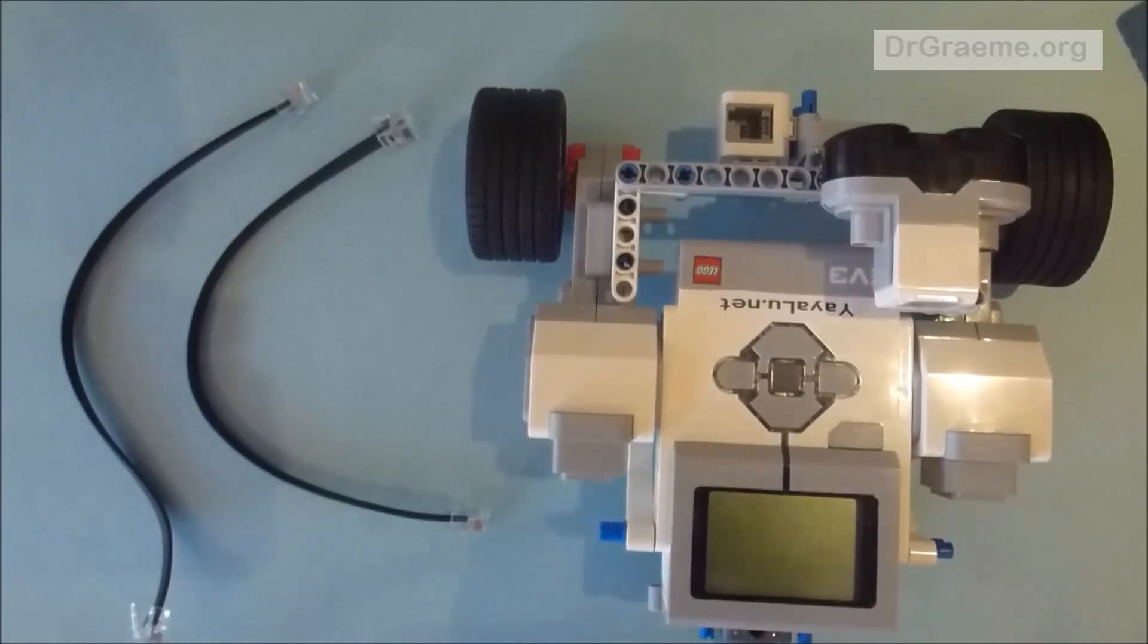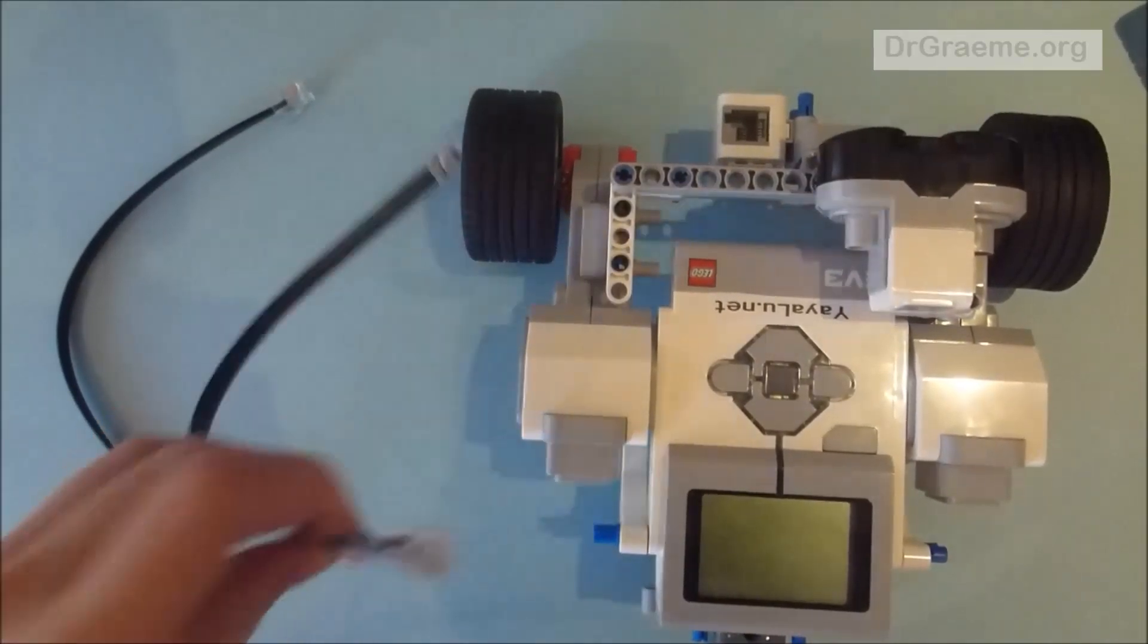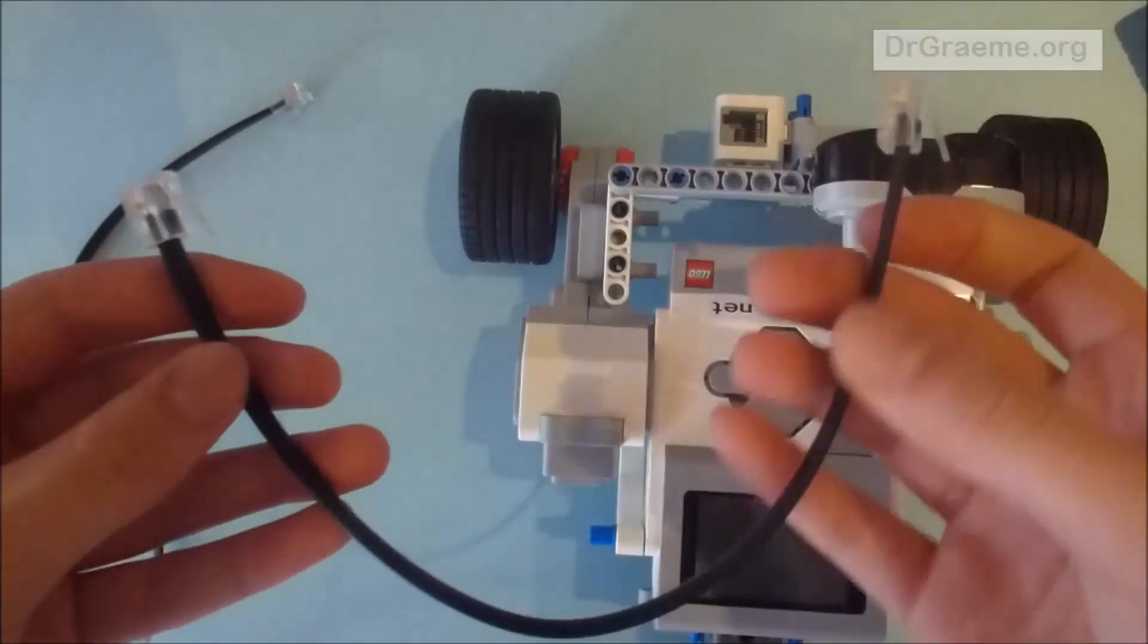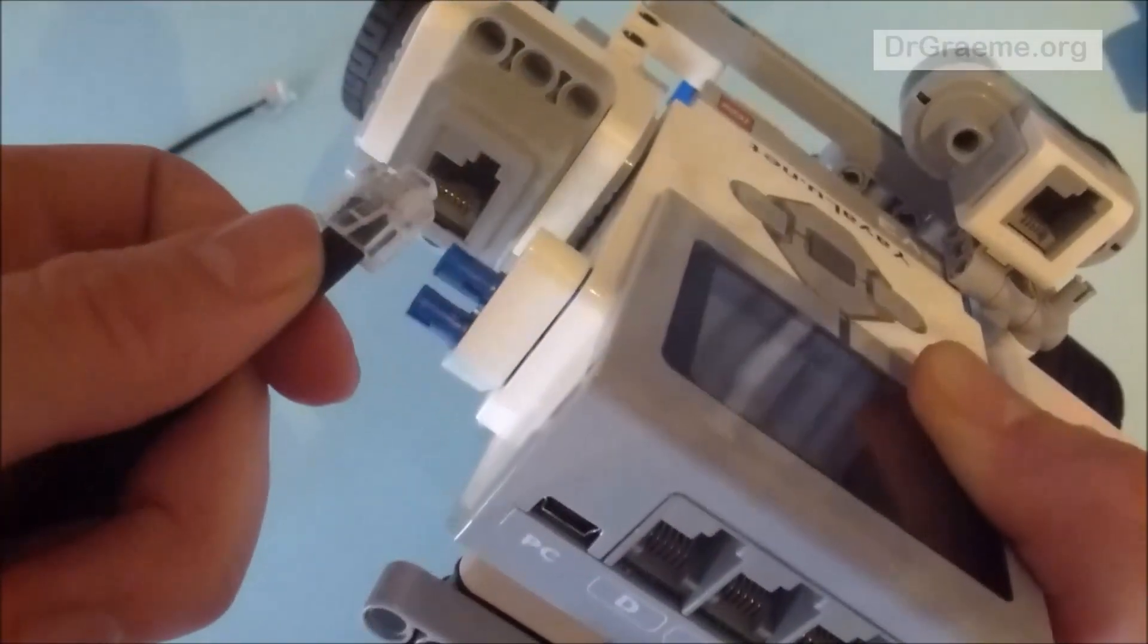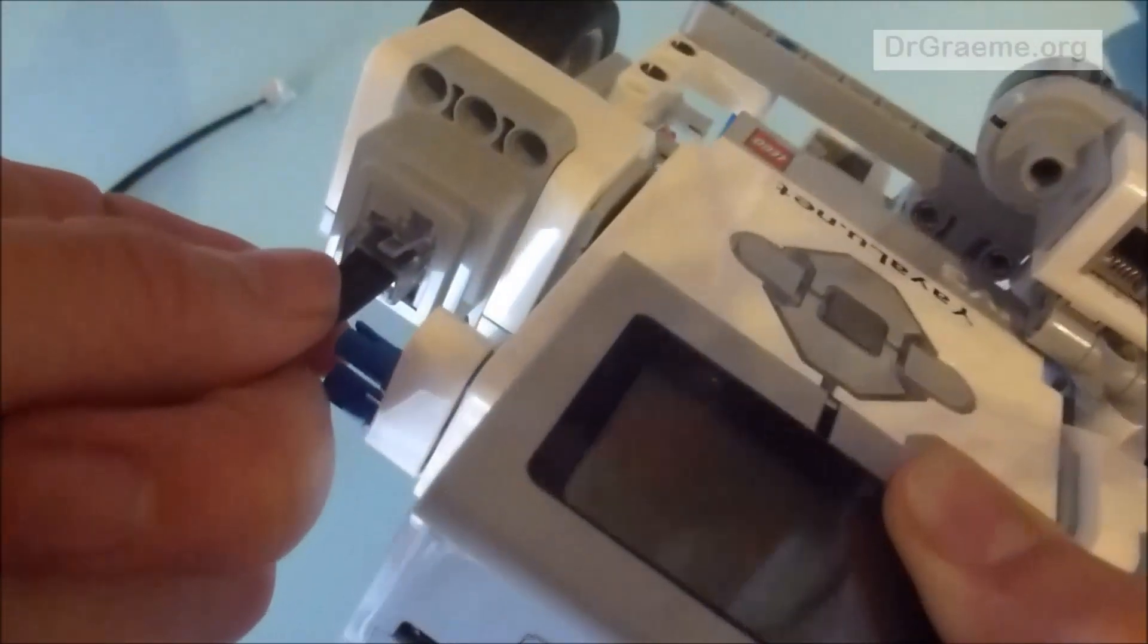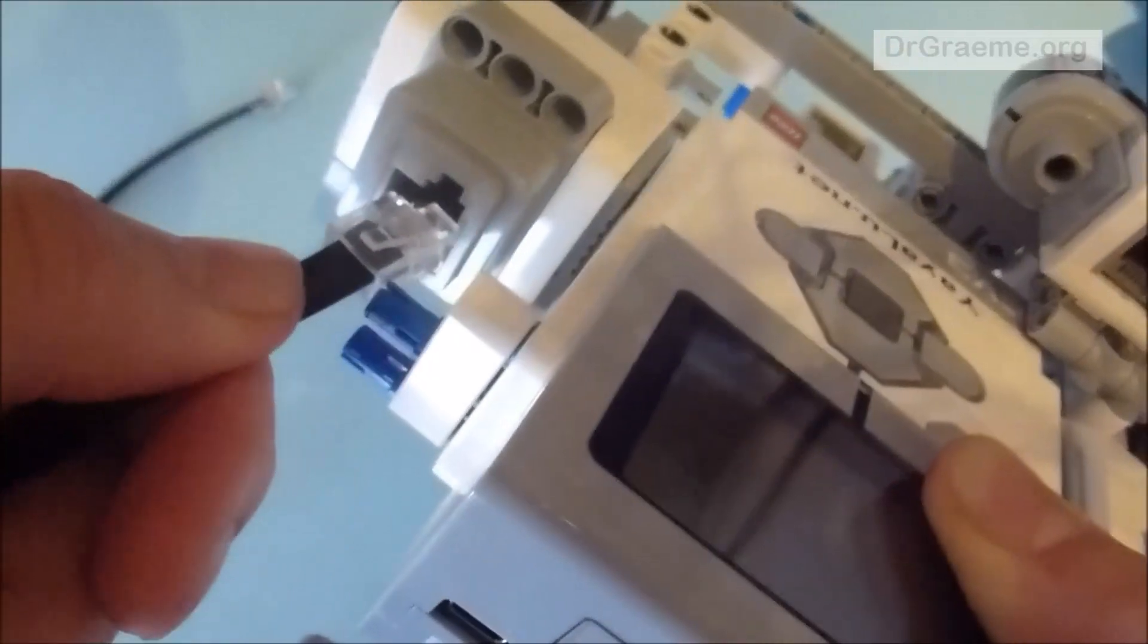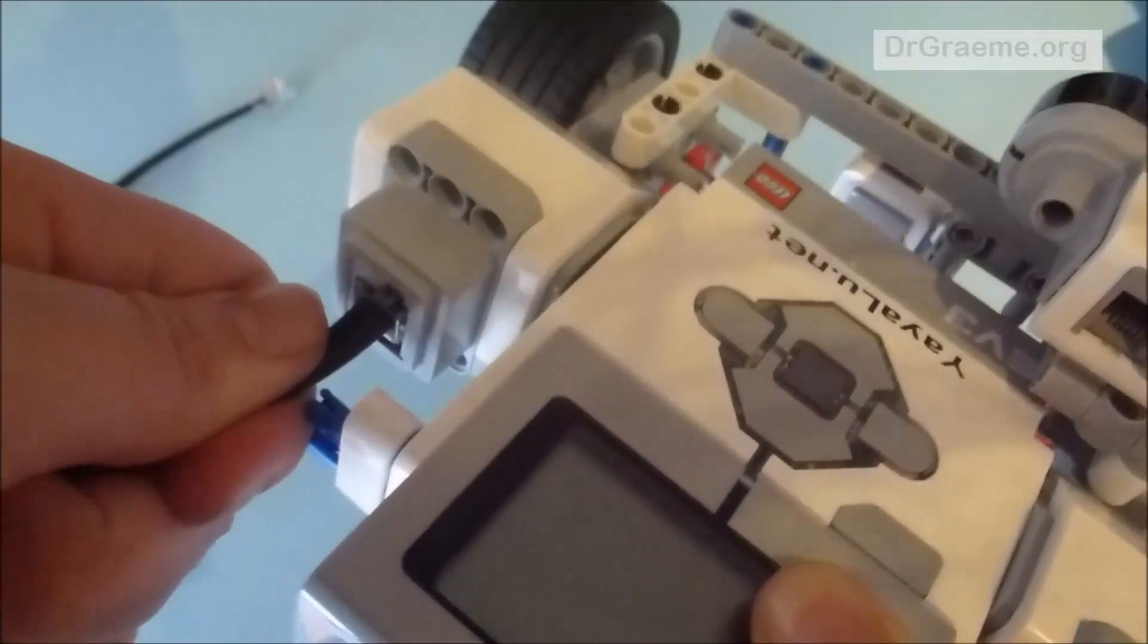Now we are going to attach the cables for the motors. Here we have a long black cable. When we add the plugs into the motor, we always make sure we push it in with the flap facing upwards where we see the cutout. We push it in and we will hear a click.